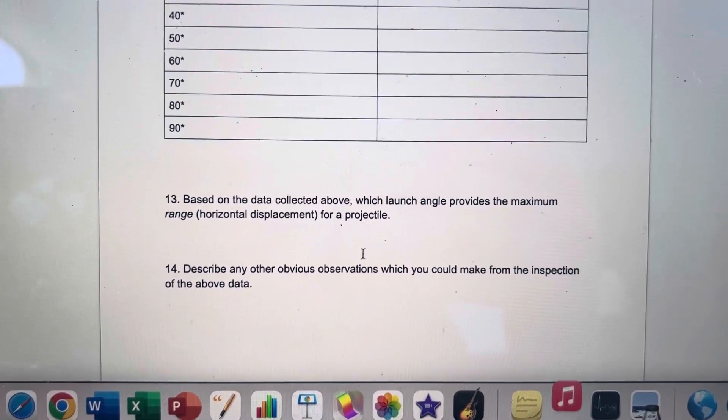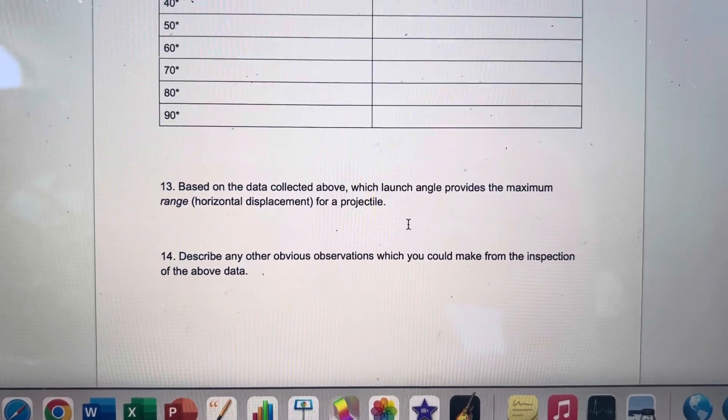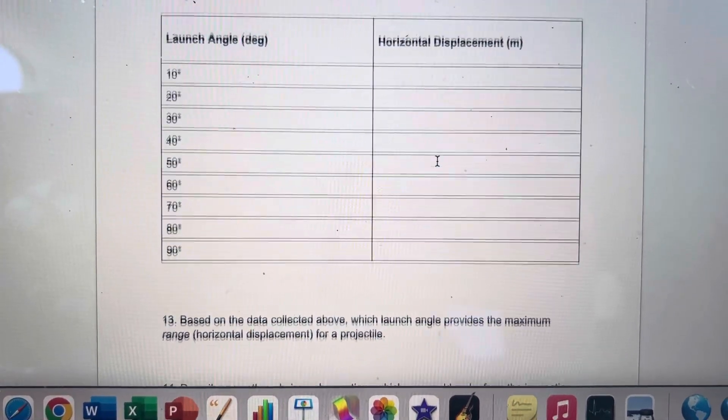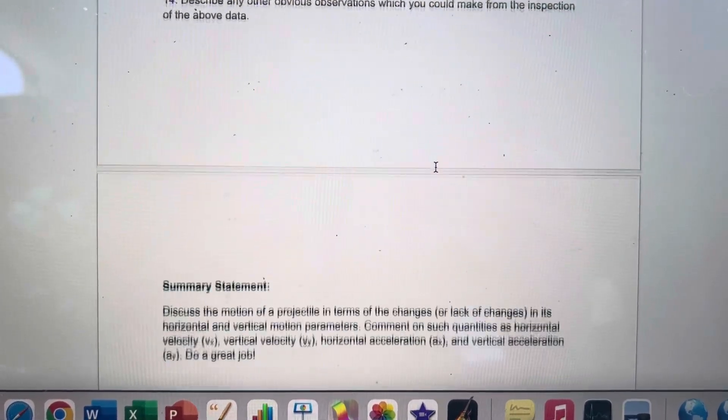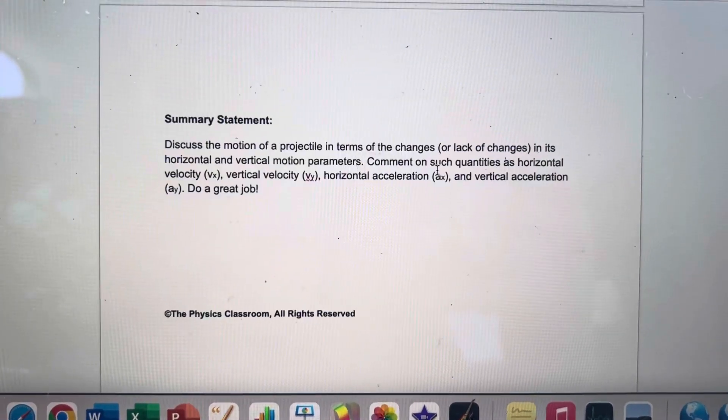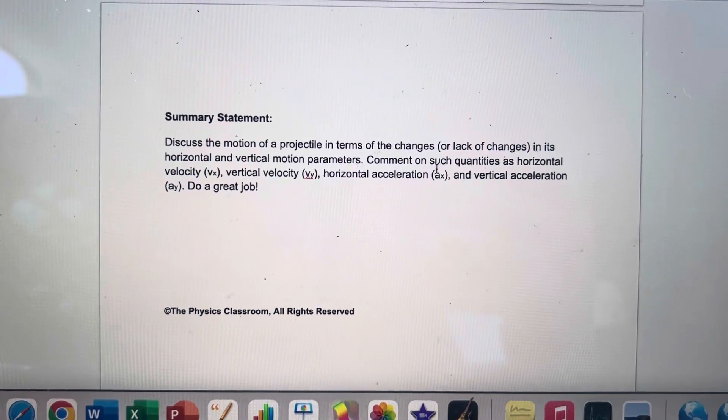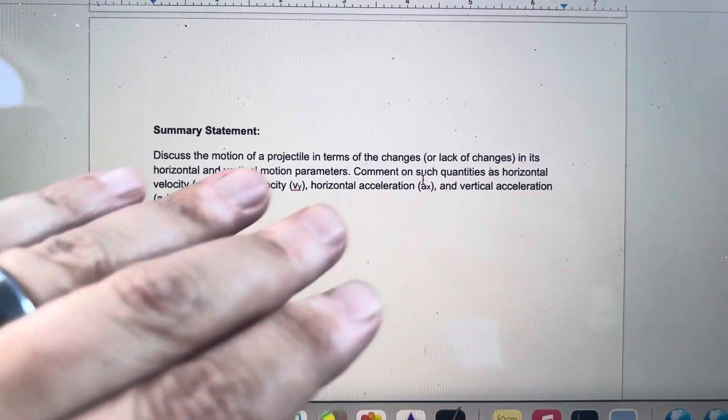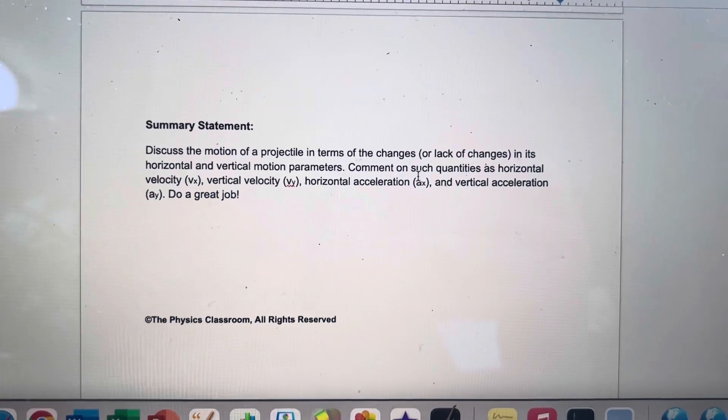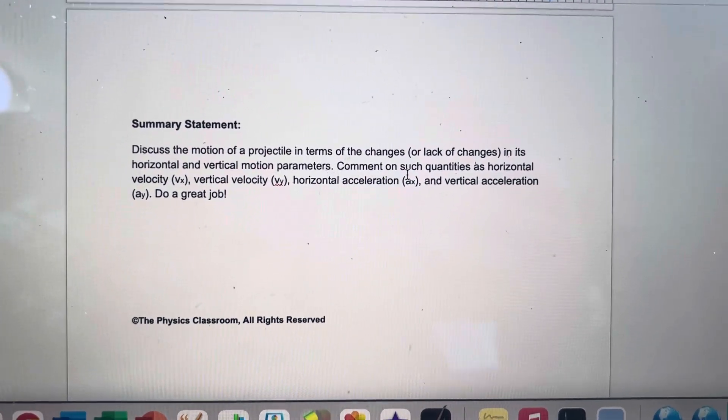That's going to be the stuff from the data table here. Describe what else you see - are there any patterns? Are any of the times the same or are they different? What happens there? Look at those things and then write a summary statement at the end discussing the motion of projectiles. Talk about all these different things.